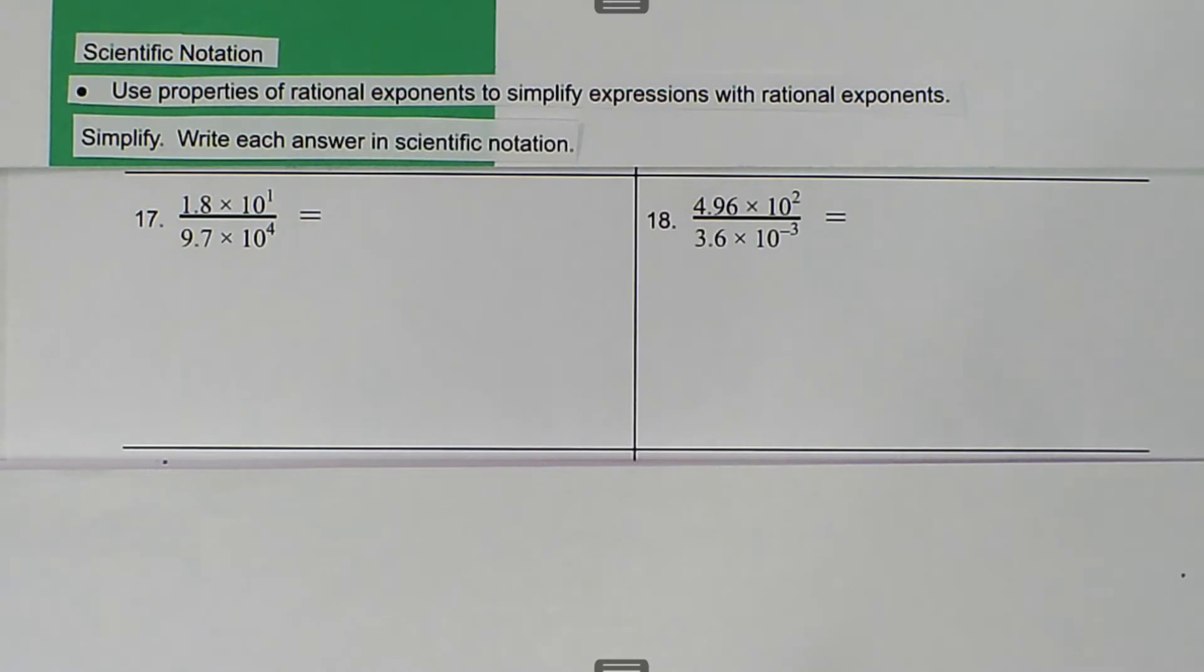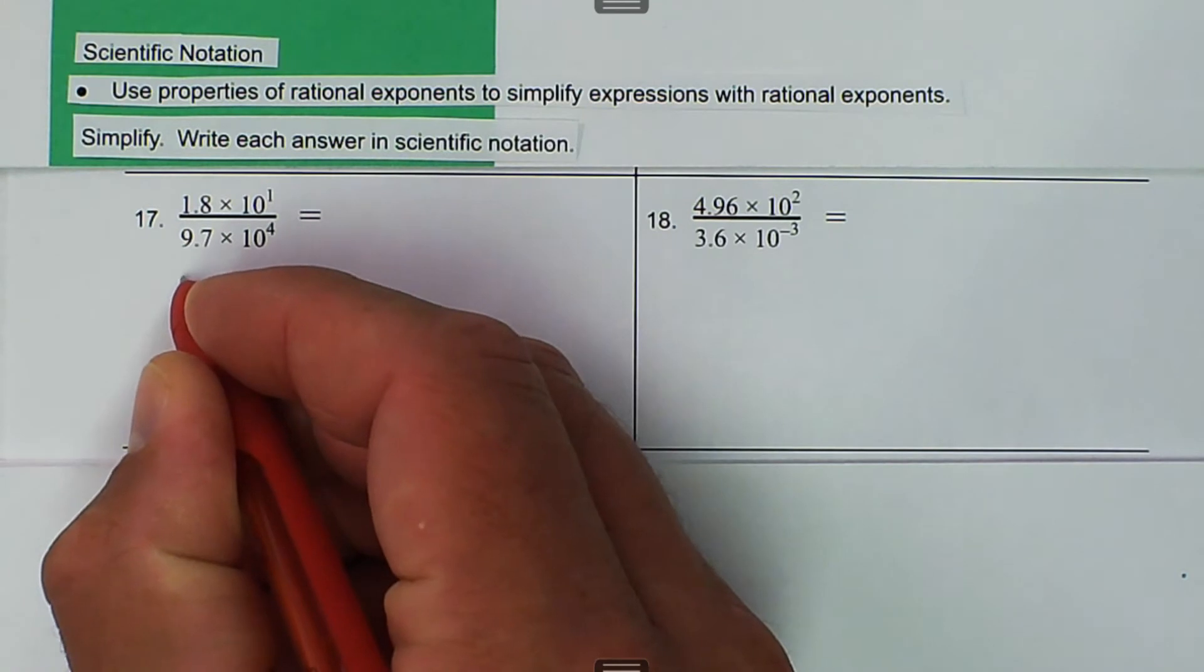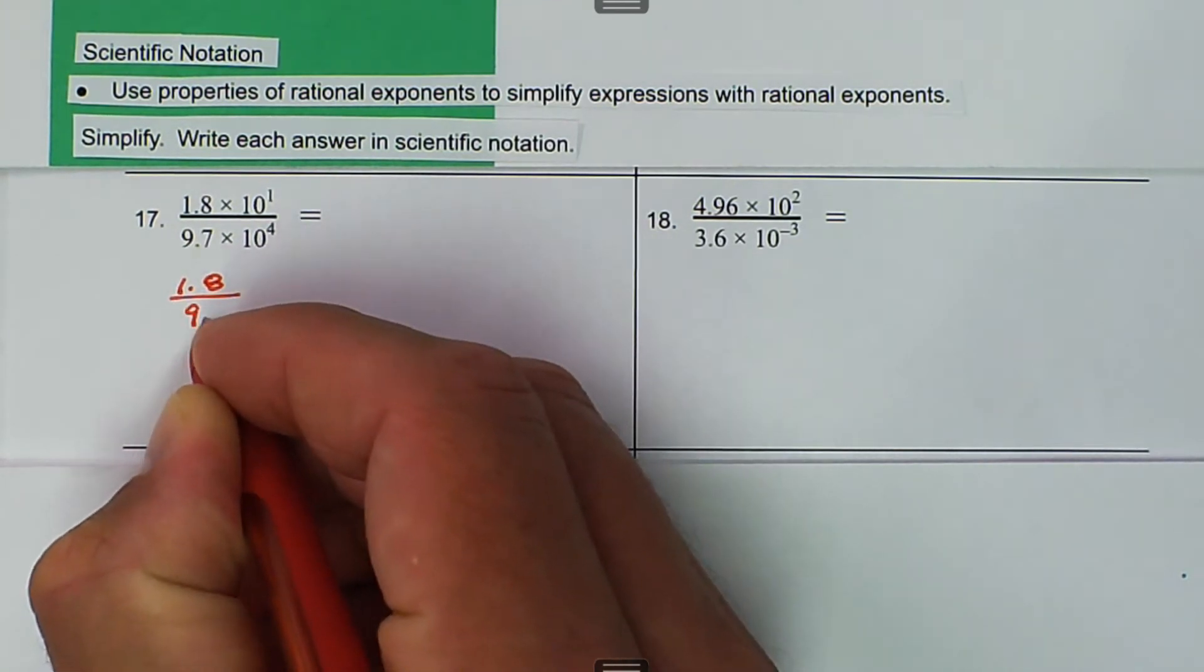We have 1.8 × 10^1 divided by 9.7 × 10^4. What we can do is take our lead terms and write those down as divisions: 1.8 divided by 9.7.